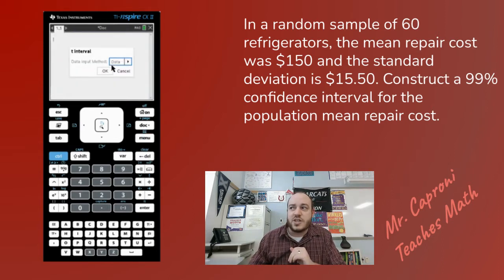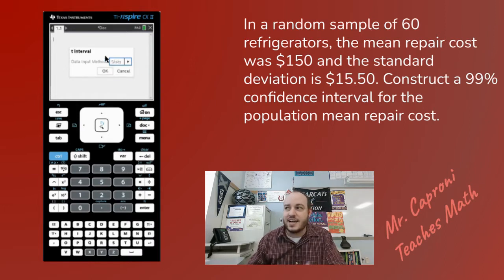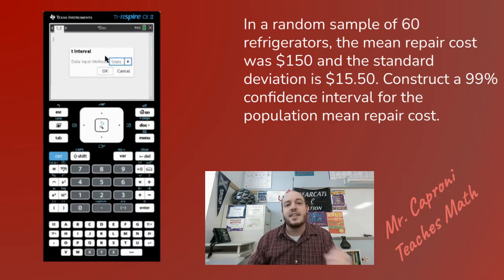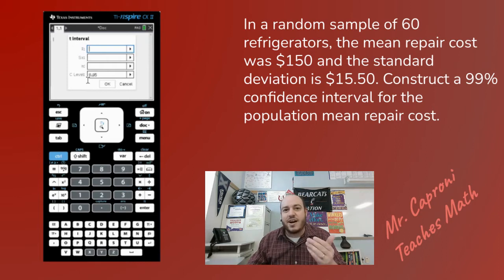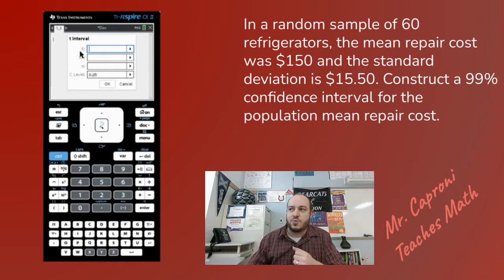Switch the input method from data to stats, because data means you have raw data, but in this situation we actually have the statistics given to us in the question. Hit okay and it will ask us for X-bar, Sx, N, and the C-level. Let's walk through each one of those.